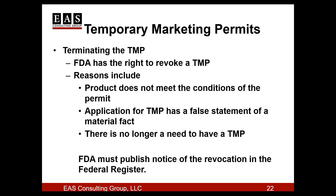We've described how a temporary marketing permit is put into place and how it can be extended — what about ending it? If a firm chooses not to extend their temporary marketing permit, it will end at that 15-month deadline. The TMP officially ends on the effective date of the petition to amend the food standard being granted, or 30 days after the petition would have been denied for the extension. But sometimes FDA could revoke a temporary marketing permit for other reasons, such as if somebody wasn't truthful about what they were doing or if the product does not meet the conditions of the permit. As with all other aspects of the TMP process, FDA will publish the notice of the action being taken in the Federal Register.